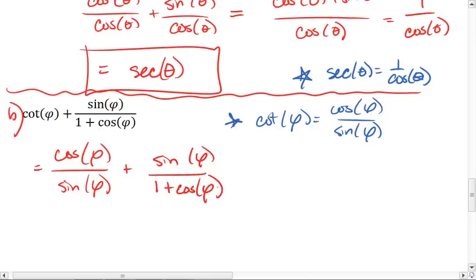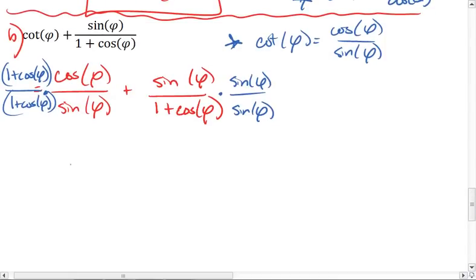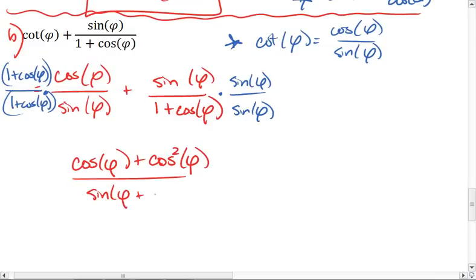We're going to multiply this first fraction by 1 plus cosine, and we're going to multiply the second fraction by sine over sine. This gives us, we distribute, cosine plus cosine squared all over sine times 1 plus cosine.